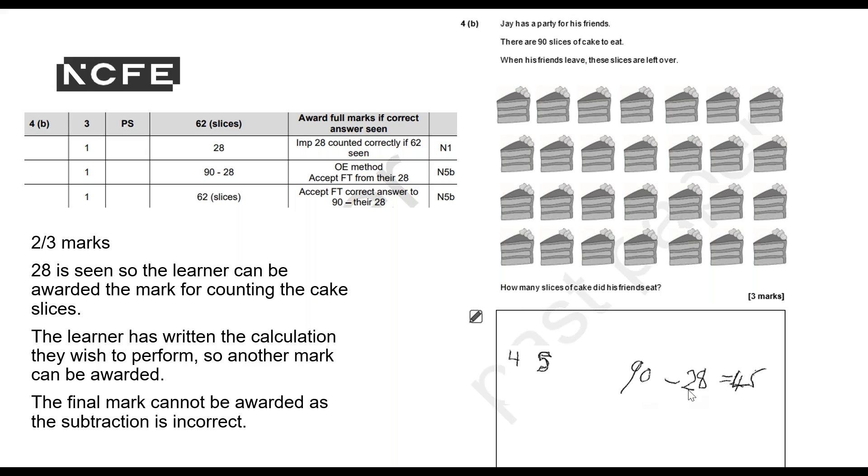They've gained two out of the three marks because had they simply written 45, they wouldn't have got any marks at all. So for your learners, do make sure that they do show their working. But for you, when you're marking, don't penalise them if they get a correct answer and they haven't shown marking unless the question specifically says that they do need to show working.